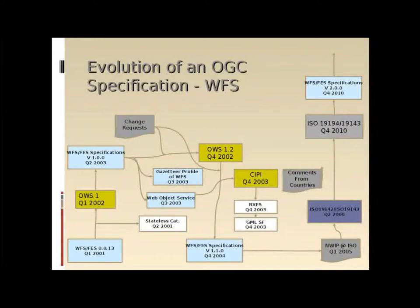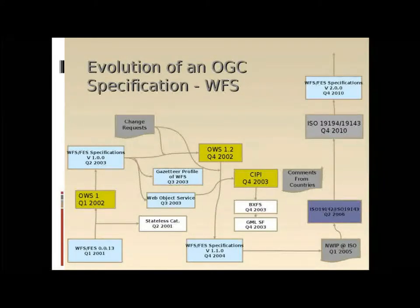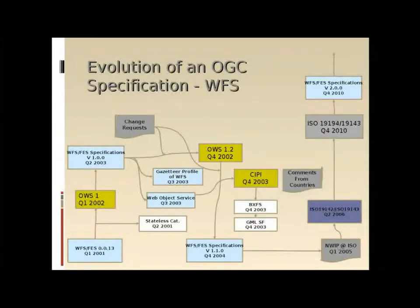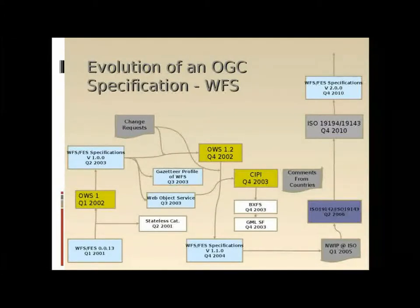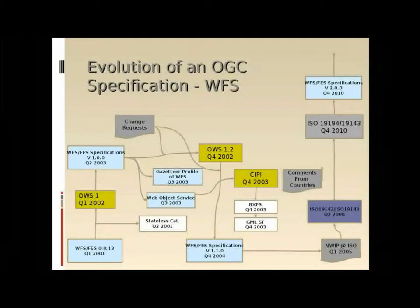This slide shows the evolution of the Web Feature Service or WFS. Once again, testbeds have been an integral part in developing the WFS standard, and the WFS has been part of almost all OGC OWS testbeds. A number of important spin-off documents developed along with the WFS, including the stateless catalog discussion paper which eventually became the CSW standard, and the GML SF standard, which is a simplified version of GML. A number of profiles of the WFS standard have been developed, of which the Gazetteer profile is of particular interest to those deploying an SDI.